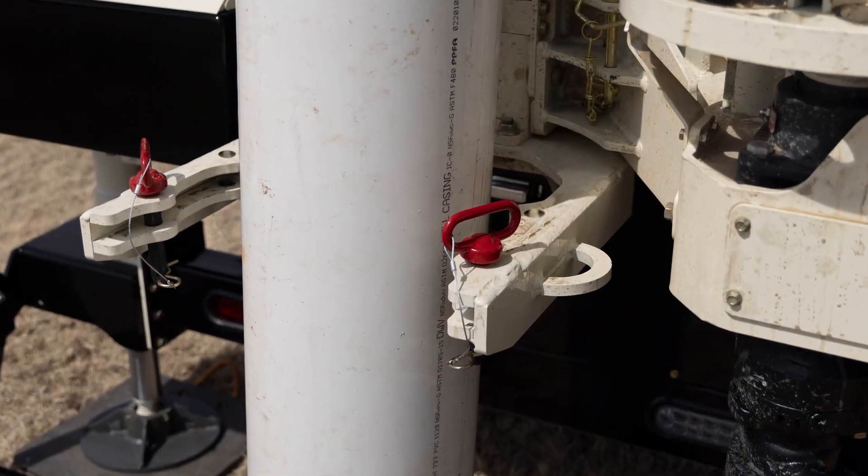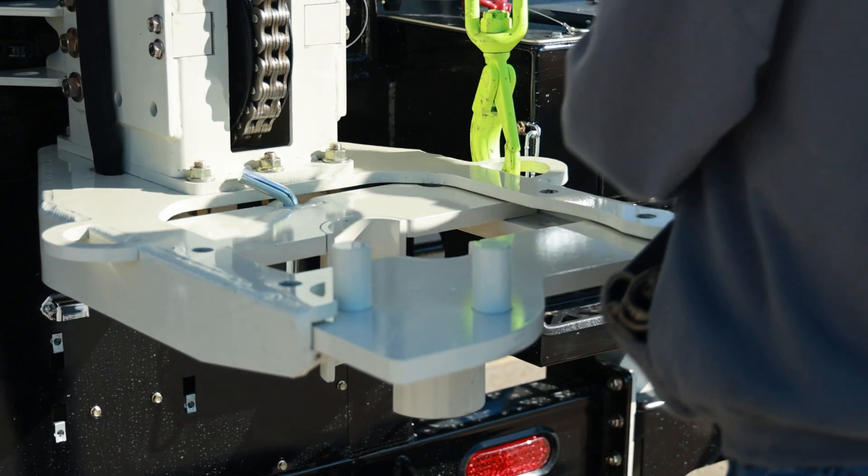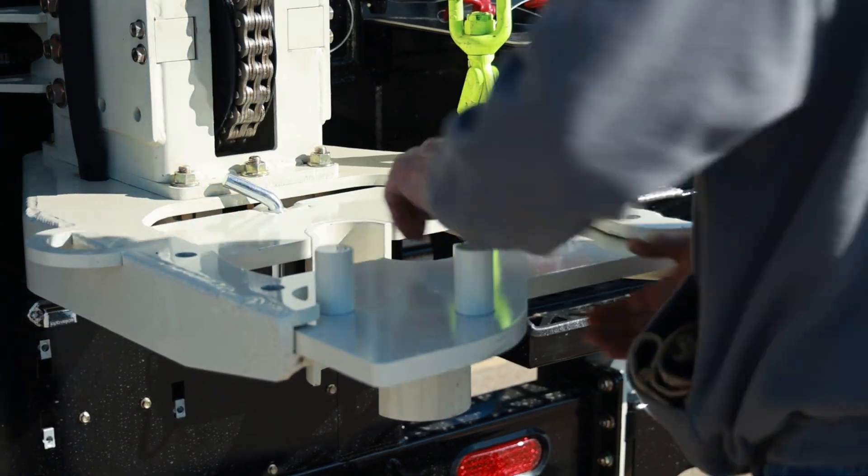To set large casing, retract the cylinder, remove the front slip pins, remove the pin holding the rear slip, and slide out the slips.